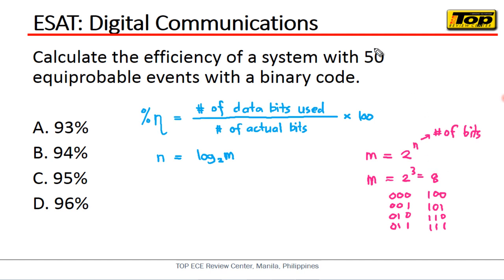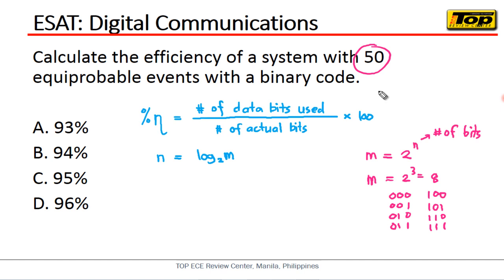What is given to us is 50, which is the number of possible combinations or the equiprobable events. The question asks for the efficiency of our system.